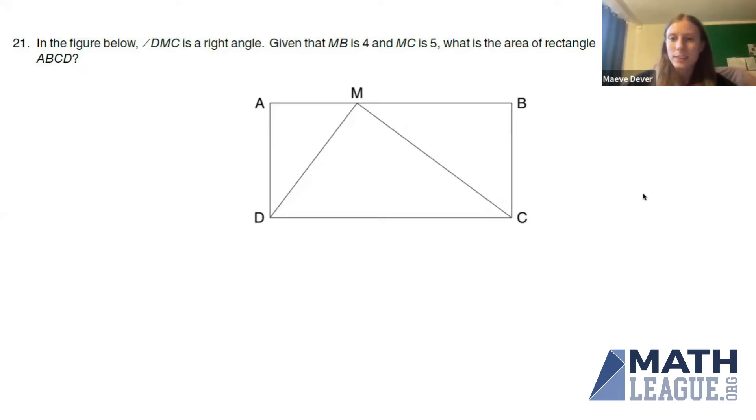Hi everyone, I'm Maeve and we're going to look at sprint problem 21 today. In the figure below, angle DMC is a right angle. Given that MB is 4 and MC is 5, what is the area of rectangle ABCD?